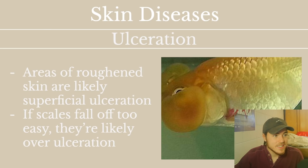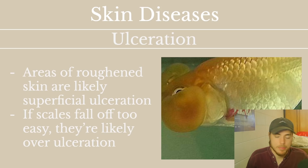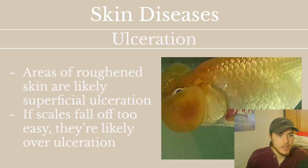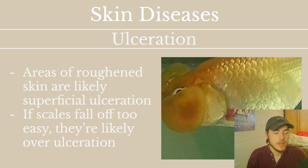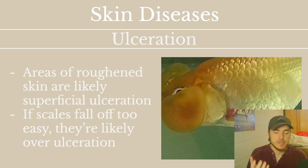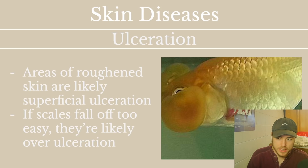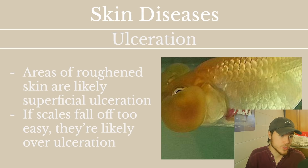For skin diseases, we have ulceration, which is very common in fish and can happen for a variety of reasons. If you find an area of roughened skin, it's usually due to superficial ulceration. If scales are falling off too easily, it's usually due to ulceration under the skin — something underneath is ulcerated and peeking up, causing scales to fall off easily. So if you notice a fish losing a lot of scales from a certain area, there might be an ulcer under the skin there.